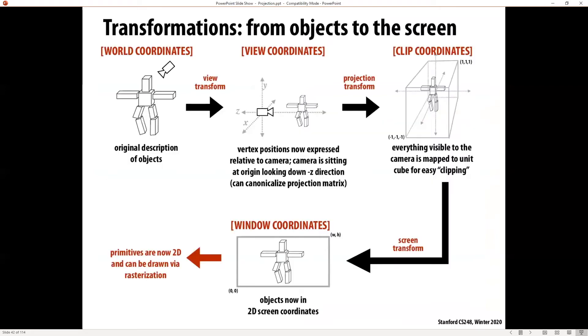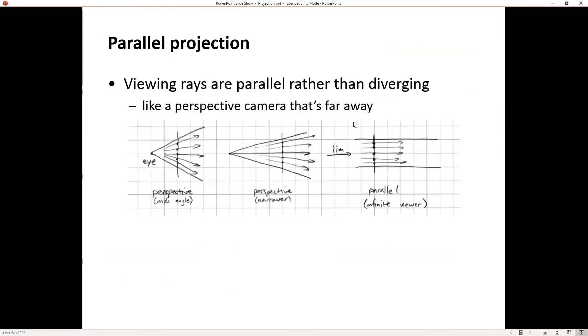We're ready to move on to the projection transform. This is the next step in the process. We've gone from raw coordinates and already got into view coordinates with our camera looking down the negative z-axis. Now we want to do something which is going to allow us to get this perspective effect and get us into a clip coordinate space.